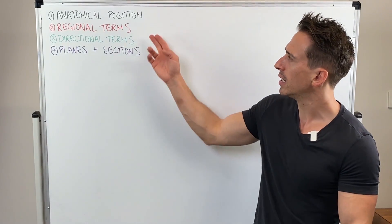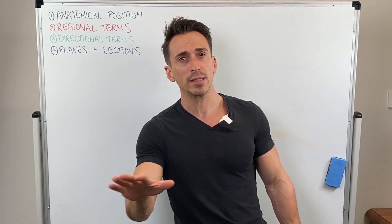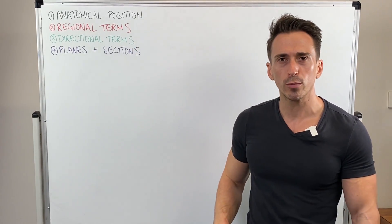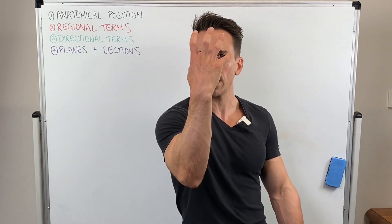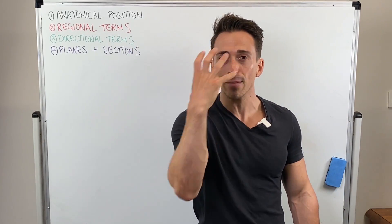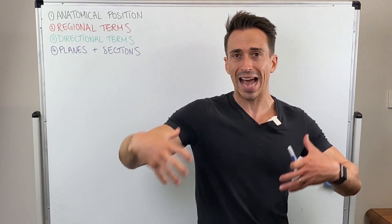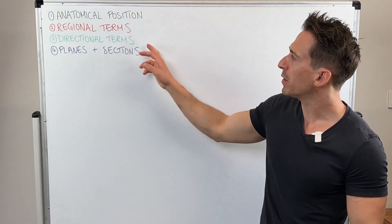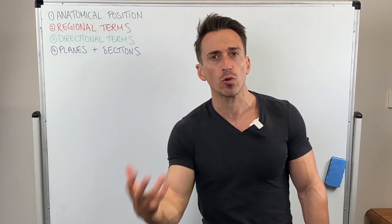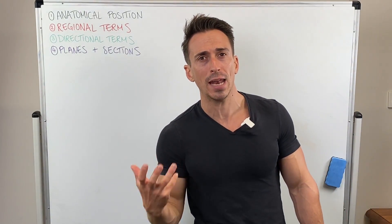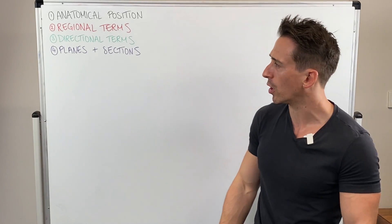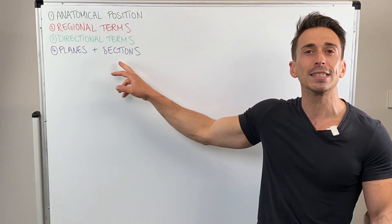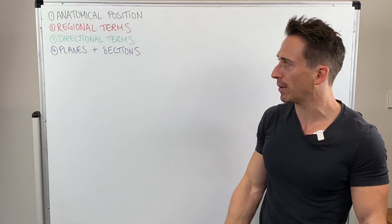The first thing is the anatomical position — super easy, doesn't take very long to learn. Then regional terms of the body, so being able to name or label various aspects of human anatomy. Directional terms — how to describe where an anatomical position or location is. And various planes and sections of the body.